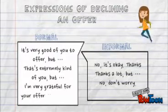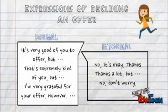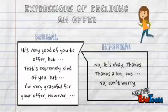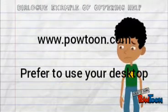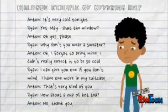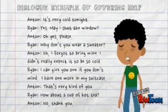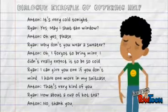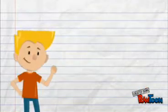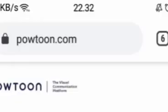And this is an example dialogue of offering help. I use bowtun.com — I prefer to use desktop, as it is formal and makes things easier than on a smartphone. This is the easier platform for making content for learning activities for basic teaching.